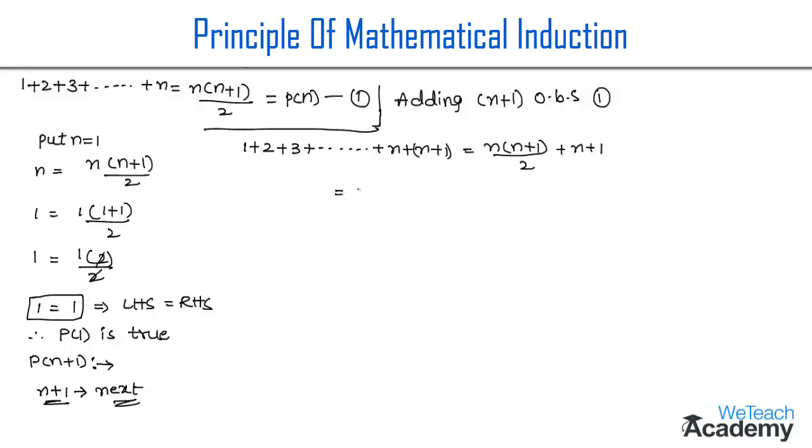Now let us simplify the RHS. First, let us take the LCM 2, and we get the numerator terms as n into n plus 1 plus 2 into n plus 1. Therefore, let us take n plus 1 as a common factor.